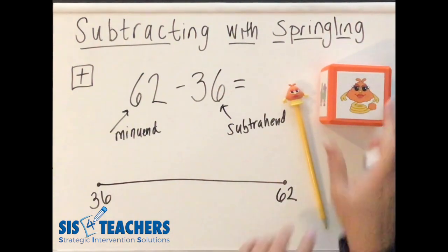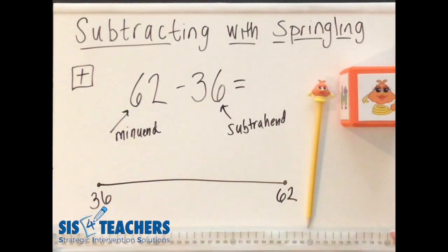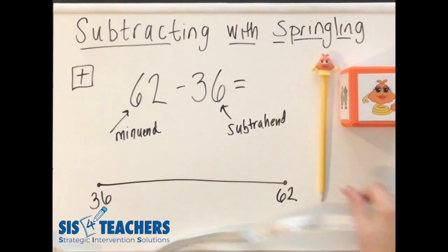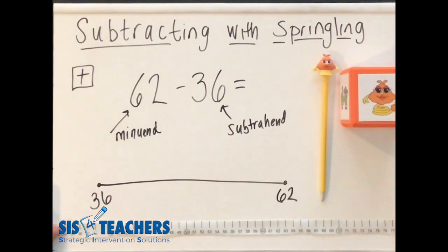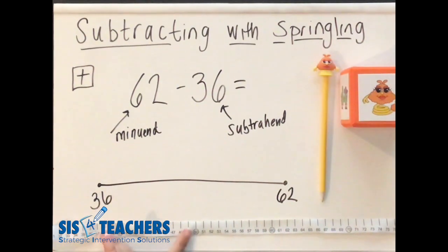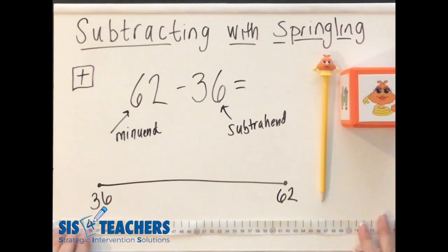Some students might struggle with finding friendly numbers. One of the things that I use is an open number line from Boxcars and One-Eyed Jacks. One of the reasons why I like this particular number line from Boxcars is because it circles all of the decade numbers, which helps students to understand friendly numbers.